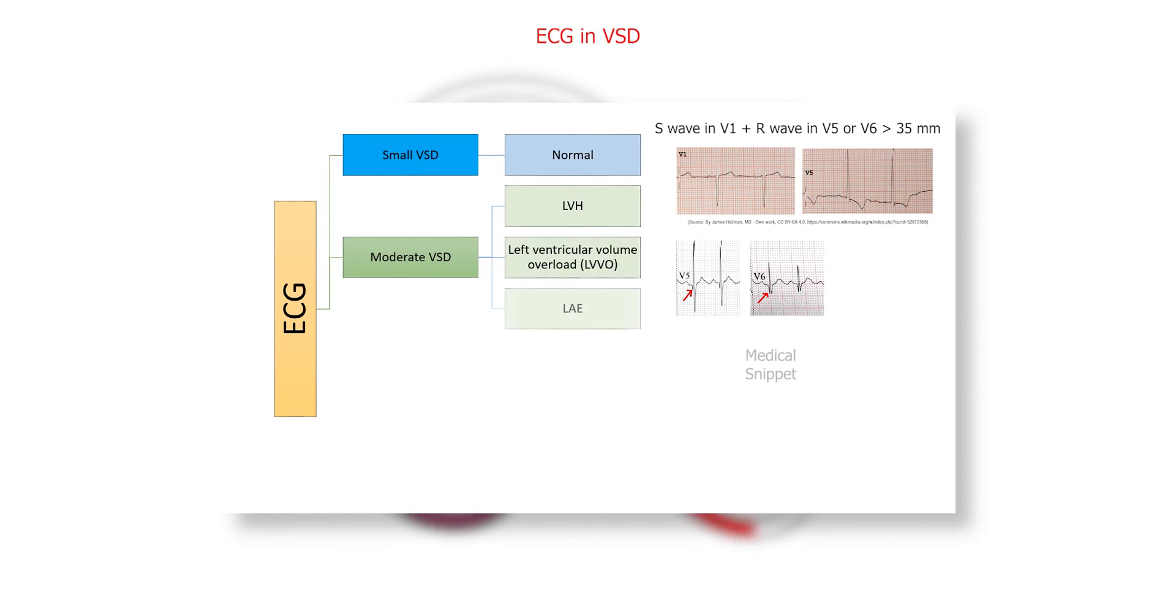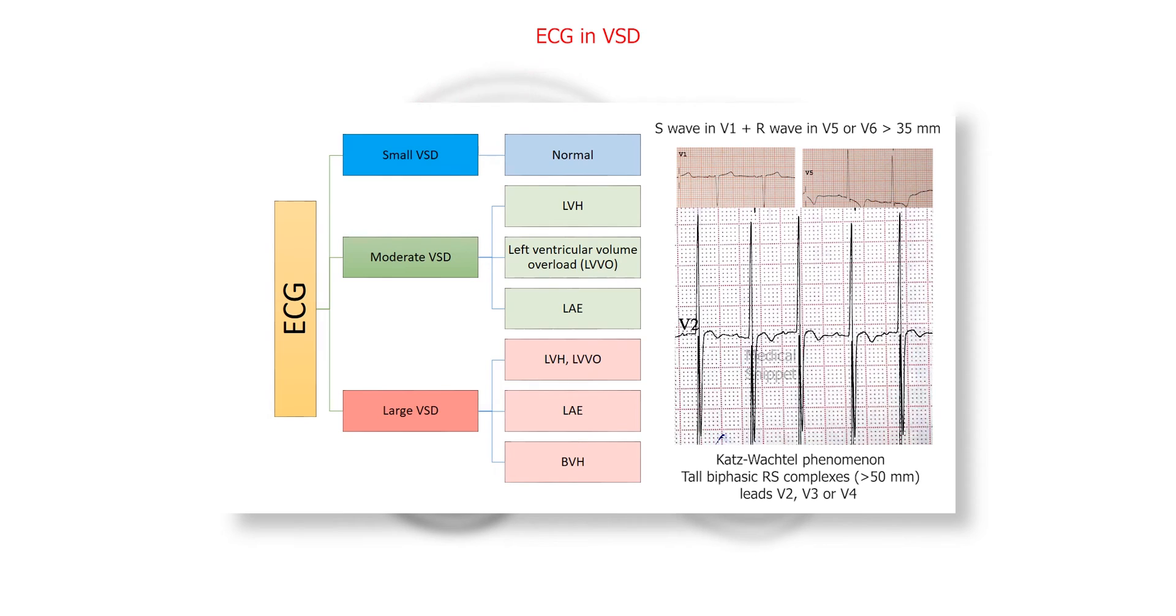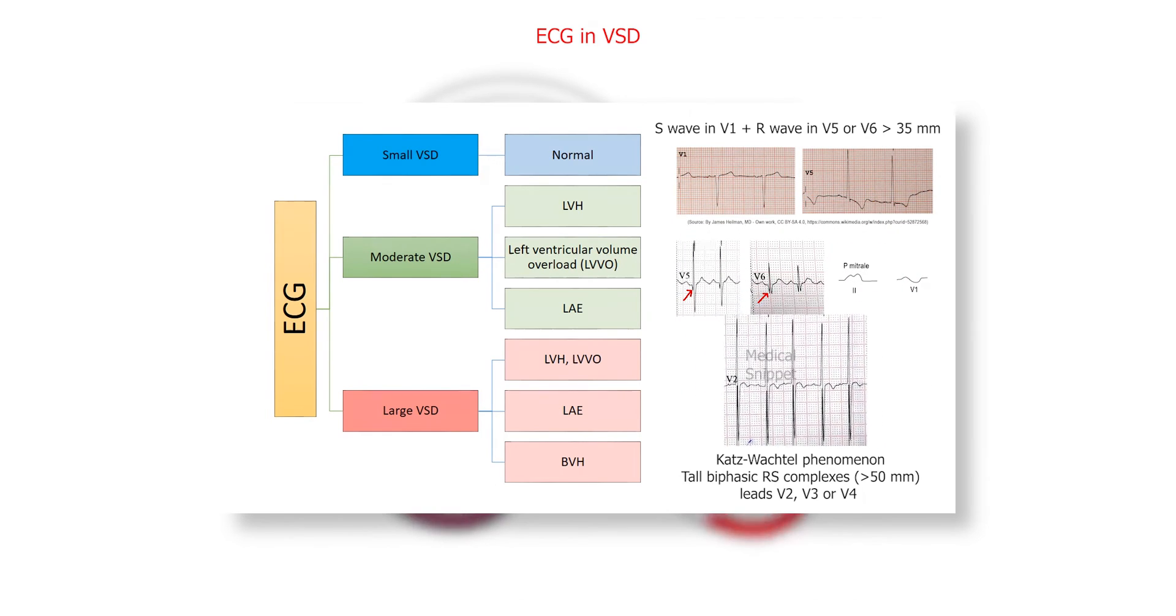Also sometimes there is left atrial enlargement, that is seen as broad, bifid P wave in lead 2, and enlarged terminal negative portion of the P wave in V1 lead. Large VSD: in addition to the above findings, there is Katz-Wachtel phenomenon. That is tall biphasic R-S complexes in the mid-precordial leads V2, V3, or V4, it denotes biventricular hypertrophy.